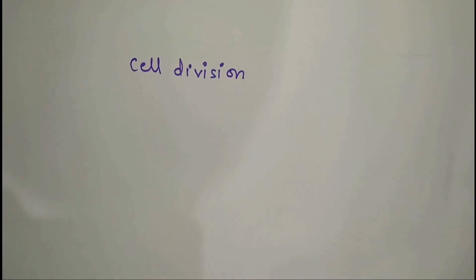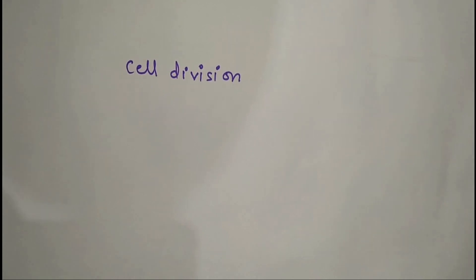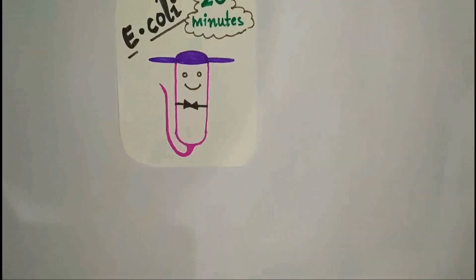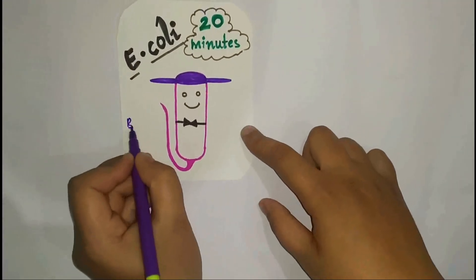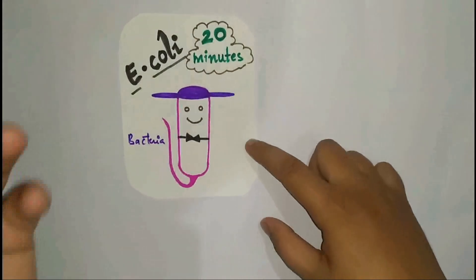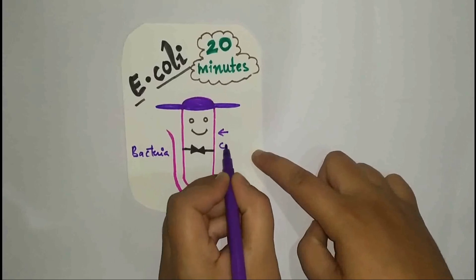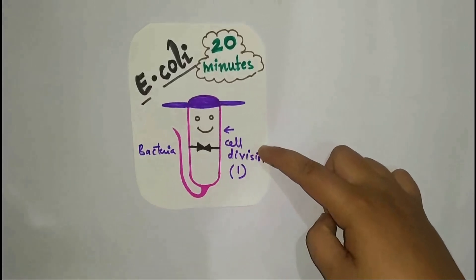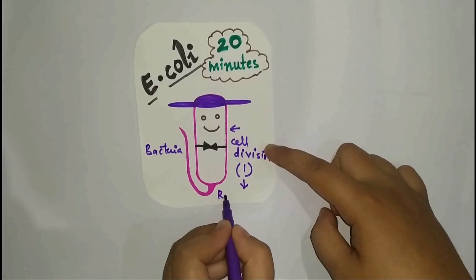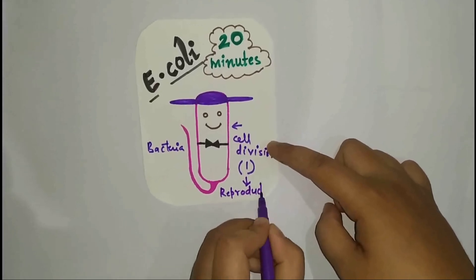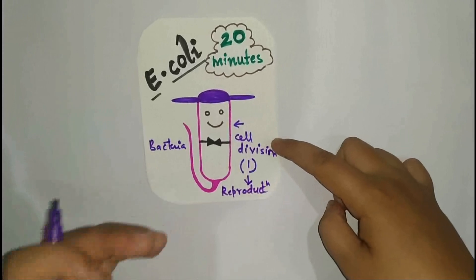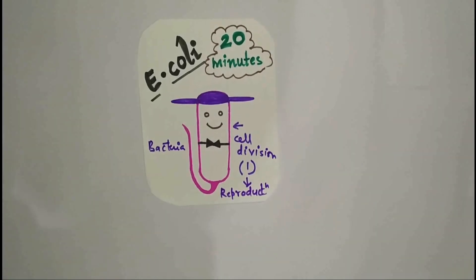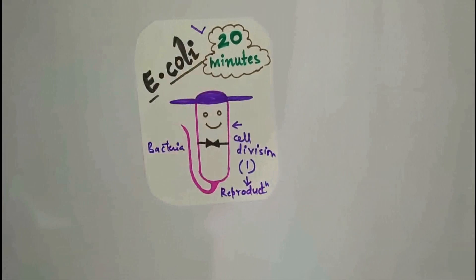Mitotic cell division occurs in unicellular organisms and in multicellular organisms as well. In unicellular organisms, for example, this is a bacterial cell — this is an E. coli cell. This bacterial cell will undergo one cell division, and that one cell division in a unicellular organism is equivalent to reproduction. This E. coli cell undergoes reproduction in only 20 minutes — isn't that amazing?